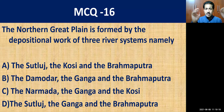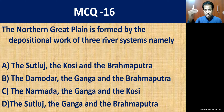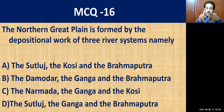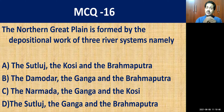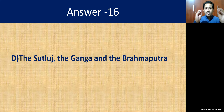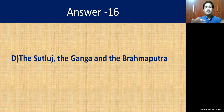MCQ question number sixteen: the Northern Great Plain is formed by the deposition work of three river systems. The options include various combinations of rivers. The correct answer is option D — Sutlej, Ganga, and Brahmaputra. These rivers brought alluvium from the high mountains and deposited it on the plains, forming the Gangetic Plain.